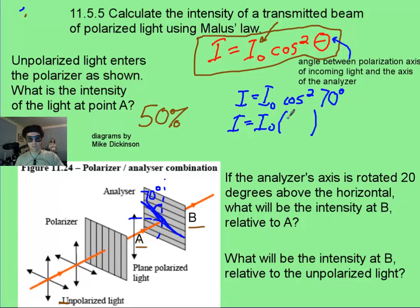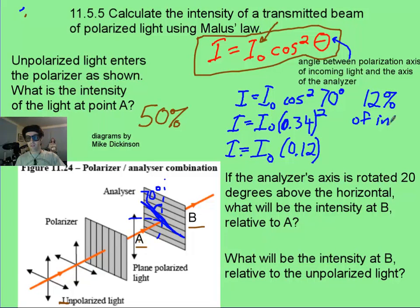Cosine of 70 is going to be 0.34, and square that, and that is going to give me 0.12. Or in other words, you can say 12% of the incoming light. Or you could also write it as 0.12 times I sub 0, or 0.12 times the intensity of what got through at A.